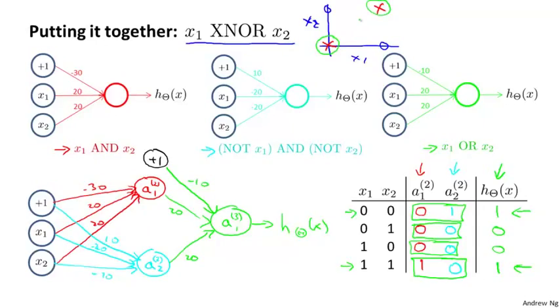And thus, with this neural network, which has an input layer, one hidden layer, and one output layer, we end up with a nonlinear decision boundary that computes this XNOR function.